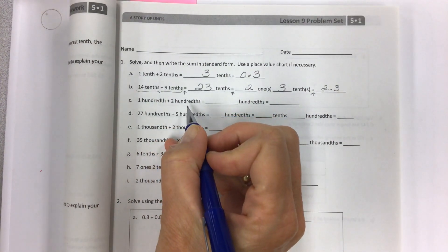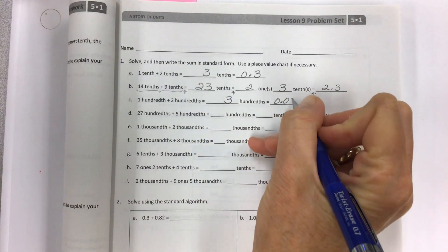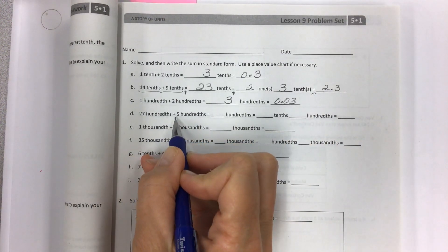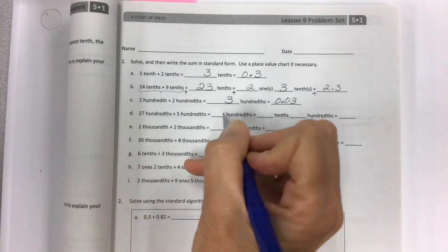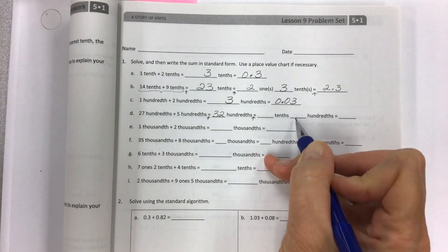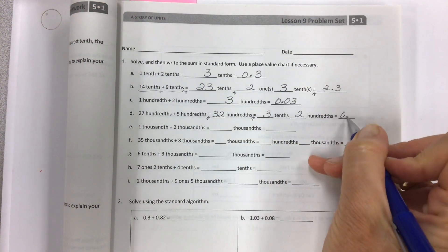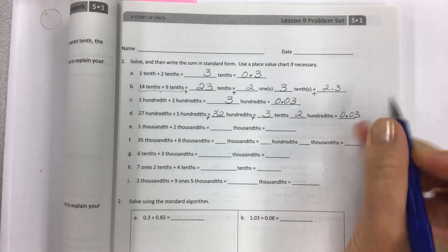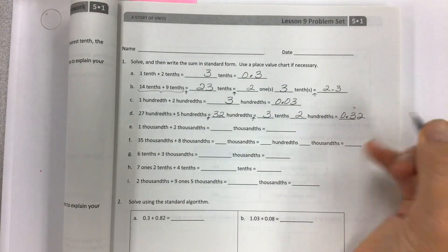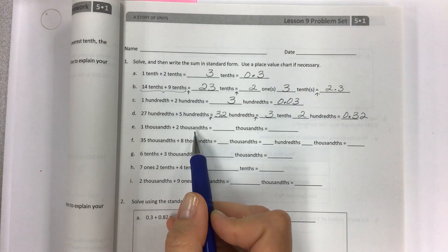Let's buzz through a few of these. 1 hundredth plus 2 hundredths equals 3 hundredths. Make sure your place value is correct. 27 hundredths plus 5 hundredths gives us 32 hundredths. Watch out for the equal signs. That's 3 tenths and 2 hundredths, which is 0.32.